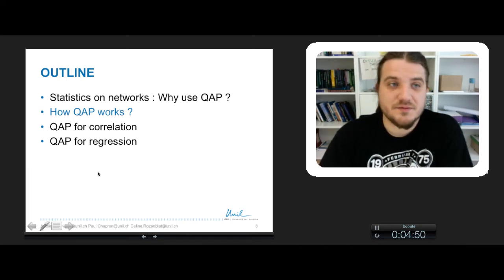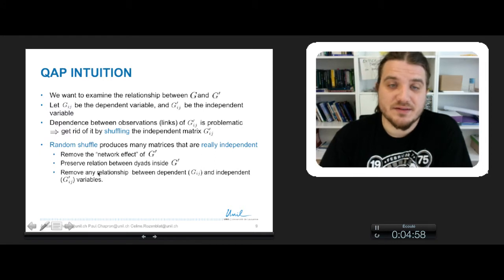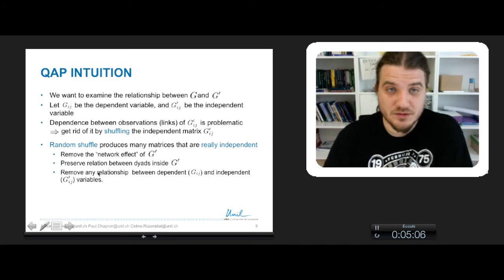This is part 2 of Core 5A on QAP correlation. We will see how QAP works and how it functions so as to have independent observations in networks when it's not the case at the origin.